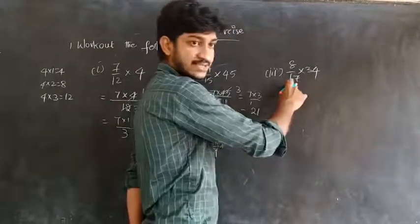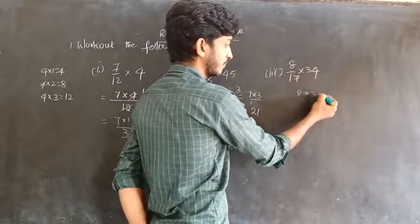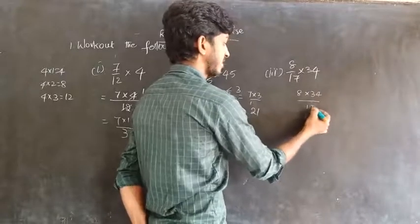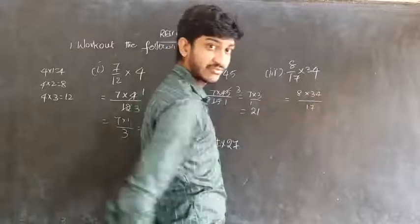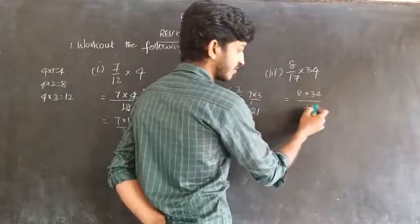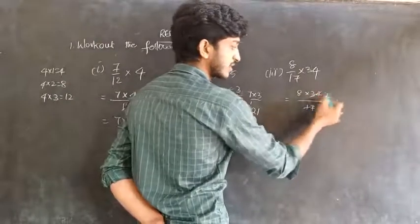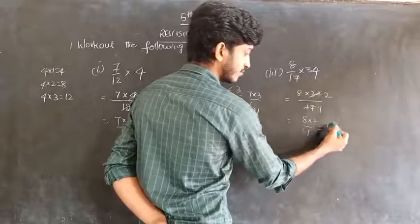Next: 8 by 17 into 34. 8 into 34 by 17. See here, 17 and 34 are in the 17 table: 17 once is 17, 17 twos is 34. So 8 into 2 by 1 equals 8 times 2 is 16.